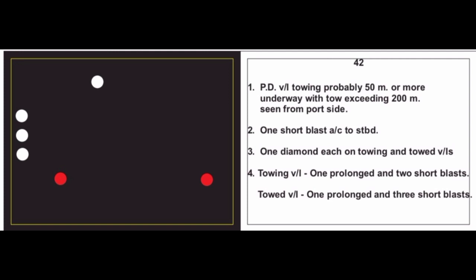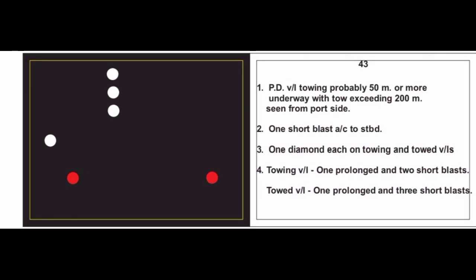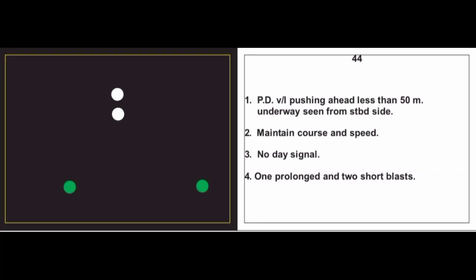Card 43: Power driven vessel towing, probably 50 meters or more, underway with tow exceeding 200 meters, seen from port side. One short blast, alter course to starboard. Day signal: one diamond each on towing and towed vessel. Towing vessel: one prolonged and two short blasts; towed vessel: one prolonged and three short blasts.